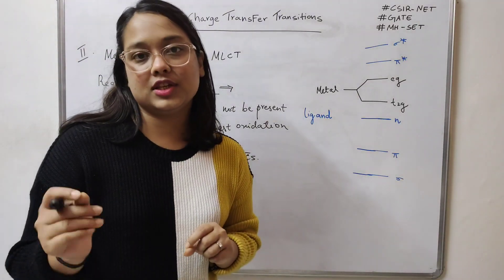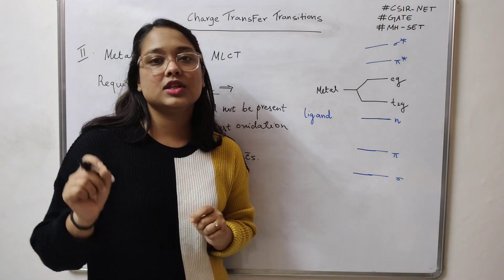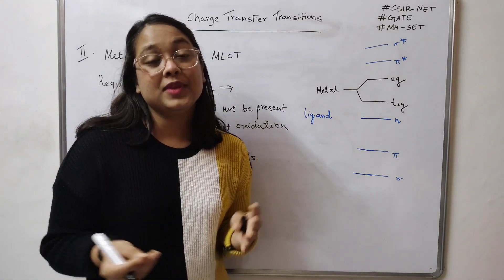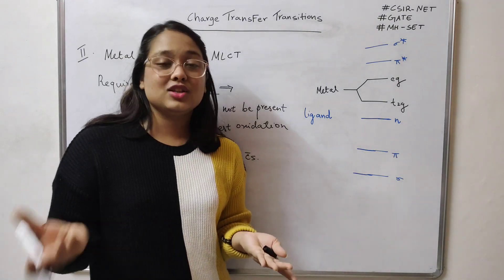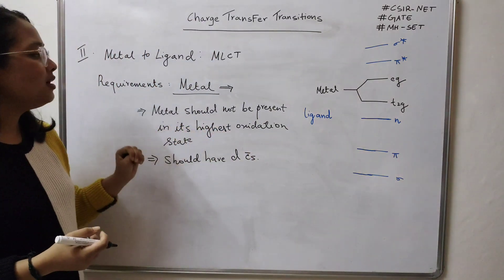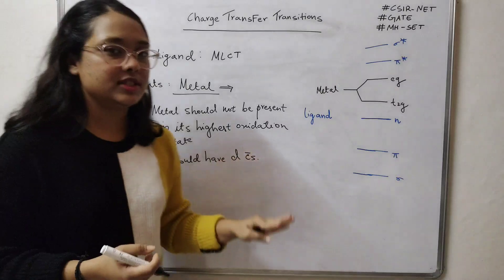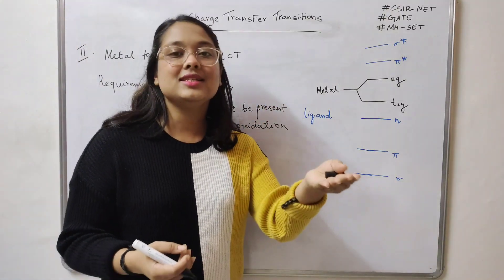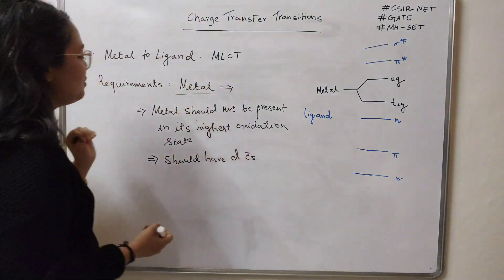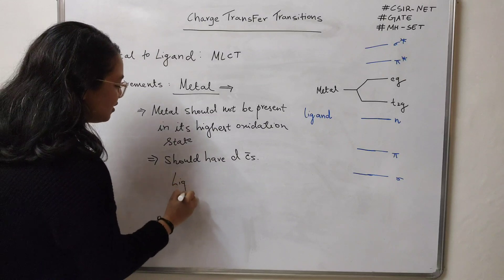You can understand this logically: if the metal is donating electrons, it cannot be in its highest oxidation state. When metals are in their highest oxidation state, they basically lose all of their electrons. So if the metal itself has no electrons, how will it donate them? That's why the metal should not be in its highest oxidation state, meaning it must retain its electrons.